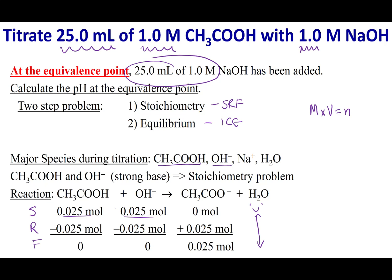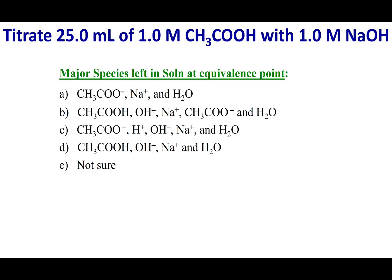Before we get to the ice problem, let's do a quick quiz question. I want you to tell me, after I finish this surf table, what is going to be the major species at the equivalence point? So after the surf table, when I start setting up my ice table, what are the things that I'm going to care about?